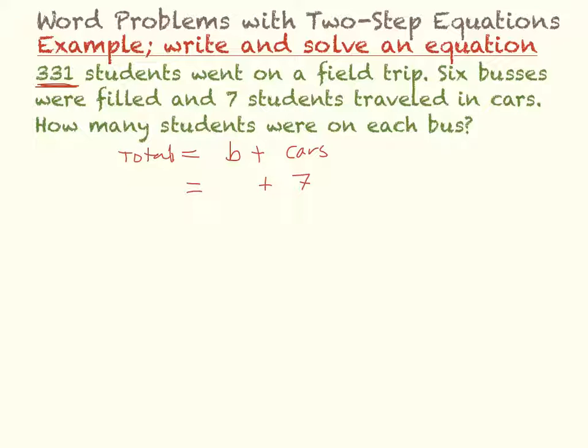And now we don't know how many people were on buses, but we know they took six buses. So it's going to be six times the number of kids on the bus. And the total is 331. So my equation that I need to solve is 331 equals six times B plus seven.